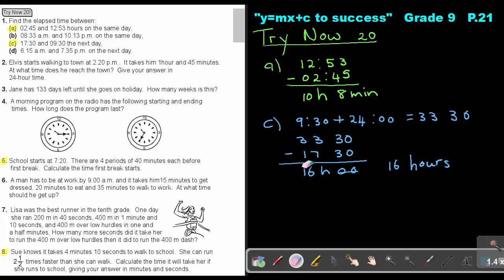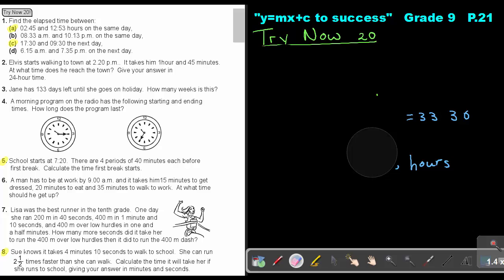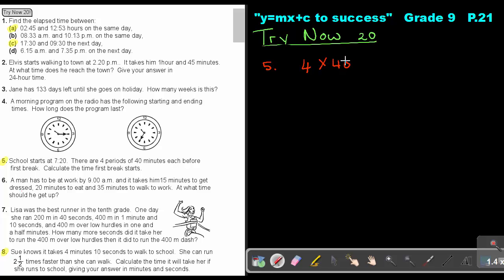Let's look at number five. School starts 7:20. There are four periods of 40 minutes each before first break. Calculate time first break starts. So the first thing that I have to do is I have to take the four periods and I must multiply with the 40 minutes. And if I do that, I'll come to an answer of 160 minutes. Now take that 160 and break it up into hours and minutes. Now two hours is 120 minutes. So it's two hours, and if I subtract 120 from the 160, I get 40 minutes. So it's two hours and 40 minutes.